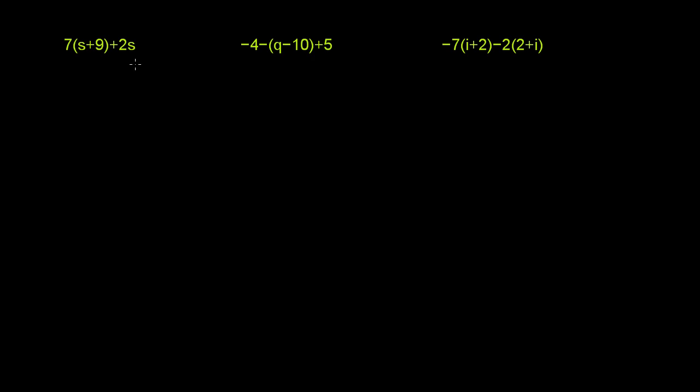Let's simplify some of these expressions. So this first one is 7 times the quantity s plus 9, plus 2s. We can distribute the 7 because 7 is times the entire quantity s plus 9.